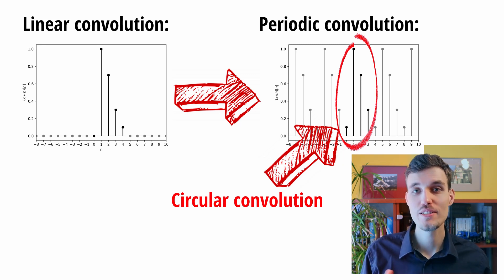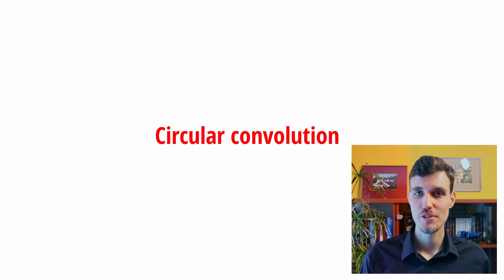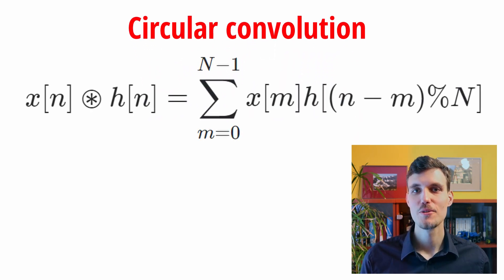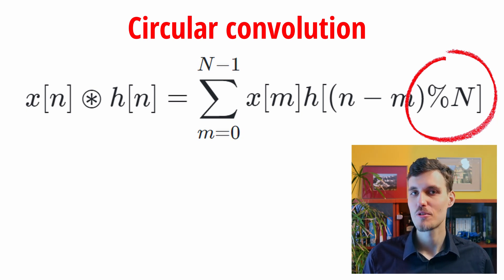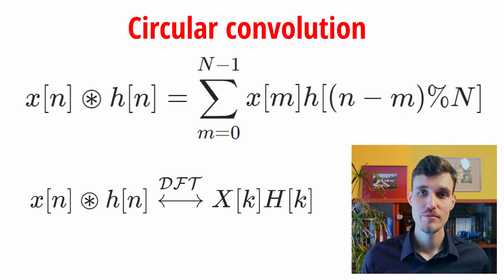So the circular convolution is a trimmed version of the periodic convolution. The circular convolution has the following formula. It looks almost the same as the linear convolution with the exception that the second operand involves a modular operation. It effectively makes this second operand infinite. It is repeated every n samples and this repetition stems from the periodicity that we just discussed. So remember the multiplication of the discrete Fourier transforms is equivalent to the circular convolution in the time domain.